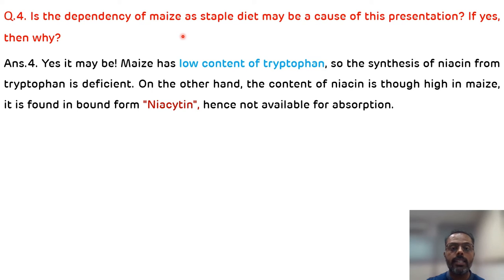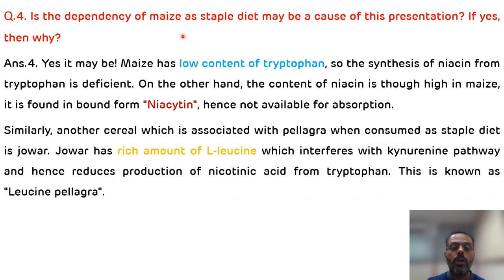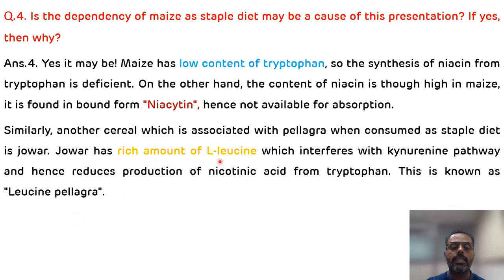If the person is having a staple diet of jowar, or sorghum, then jowar or sorghum contains a high amount of leucine. This leucine will also inhibit the conversion of tryptophan to niacin via the kynurenine pathway, hence reducing the production of niacin. Pellagra which occurs due to the consumption of jowar is known as leucine pellagra, because it contains a high amount of leucine.